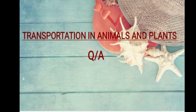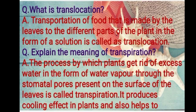Hello students, welcome to your bio class. In continuation of the previous video, in this video lesson we are going to see question answers related to the chapter Transportation in Animals and Plants. The first question is: what is translocation? Answer: transportation of food that is made by the leaves to the different parts of the plant in the form of a solution is called translocation.